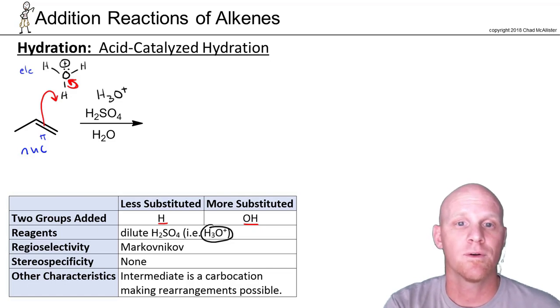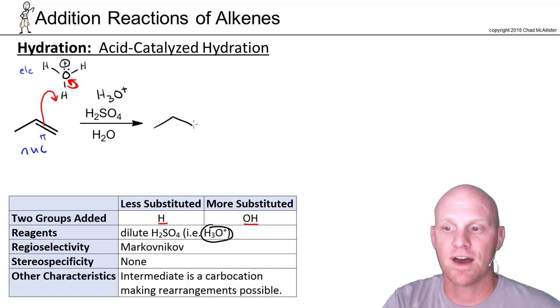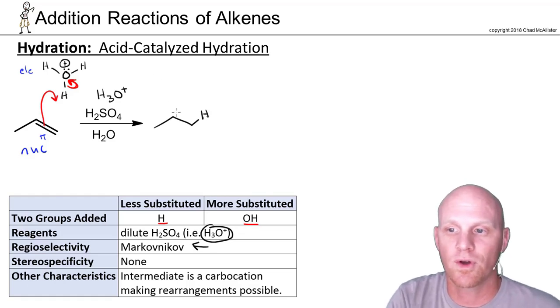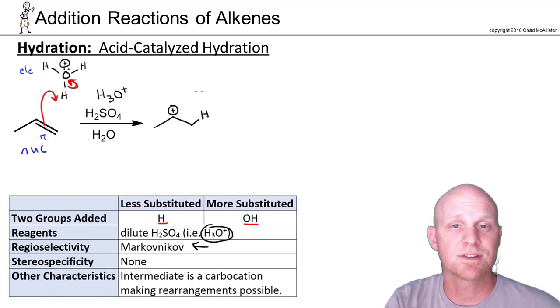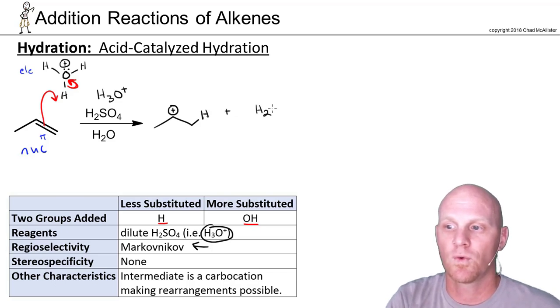So this actually does help him. So if we look here, we're going to add that H to the less-substituted side. We see this is a Markovnikov addition. This also goes through a carbocation intermediate, so we're adding that H to the less-substituted side to get that more-substituted, more stable carbocation intermediate, and we're also going to form a water molecule.